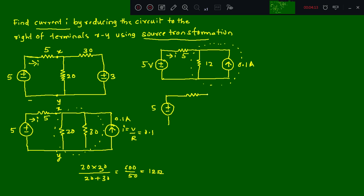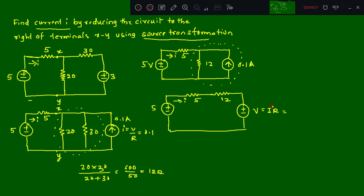Redrawing again: we have 5V as it is, 5 ohm in series. The 12 ohm in parallel with the current source becomes a voltage source in series with 12 ohm. Since the current source arrow points upward, the plus sign comes first. Using Ohm's law, V = I × R: i is 0.1, R is 12, so V = 0.1 × 12 = 1.2 volts.